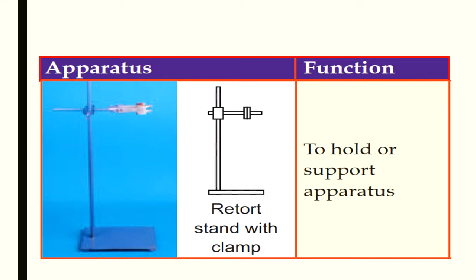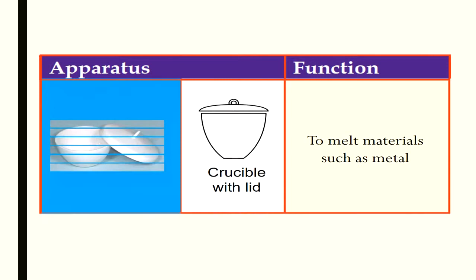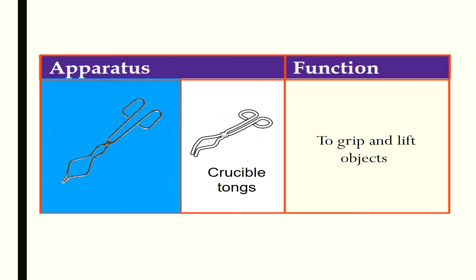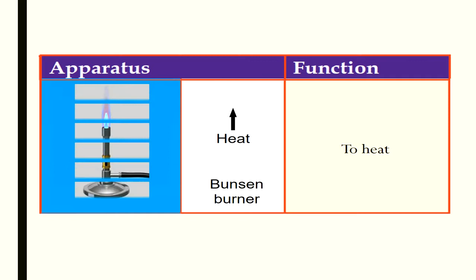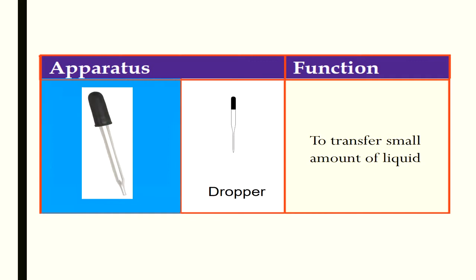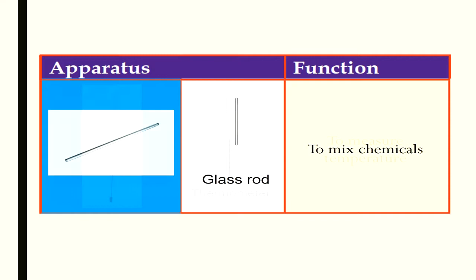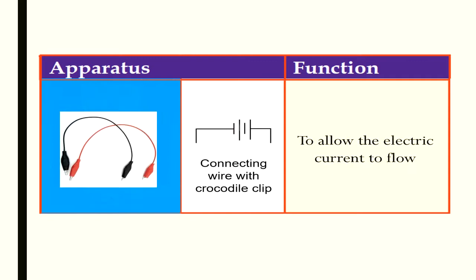Retort stand with clamp - to hold or support apparatus. Crucible with lid - to melt materials such as metal. Crucible tongs - to grip and lift objects, especially hot objects. Bunsen burner - to heat. Dropper - to transfer small amounts of liquid. Glass rod - to mix chemicals. Thermometer - to measure temperature. Connecting wire with crocodile clip - to allow electric current to flow.